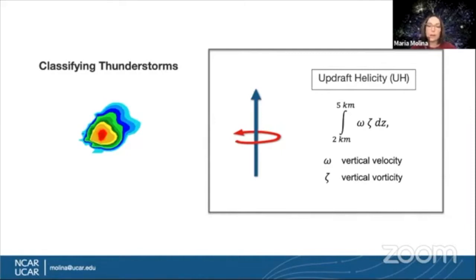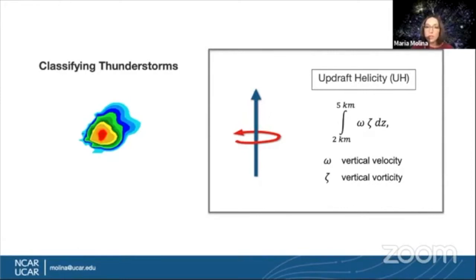Many different physical variables and parameters have been found to help with their identification and prediction, but one variable that has been found to be very useful for identifying storms more likely to produce these severe hazards is updraft helicity. Updraft helicity takes into account the vertical velocity of winds, which gives us information on the strength of a storm's updraft and vertical vorticity, which is the spin in the atmosphere. A stronger rotation implies that a storm is more likely to be a supercell, a morphology more frequently associated with the production of severe hazards.